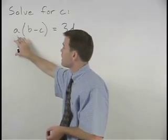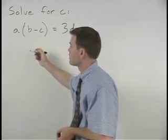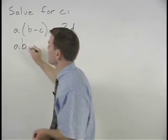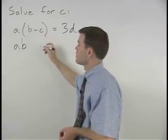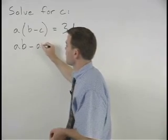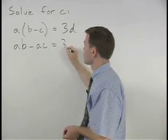So we have A times B, which is AB, minus A times C, which is minus AC, equals 3D.